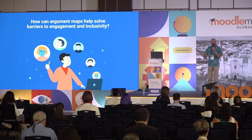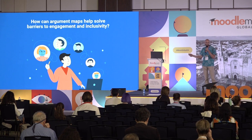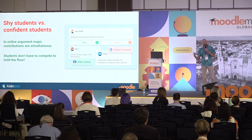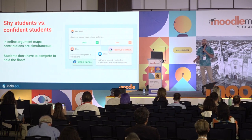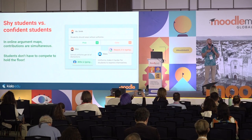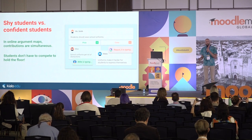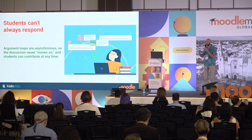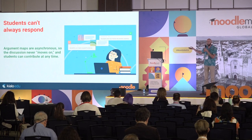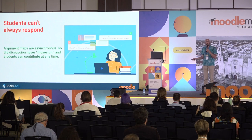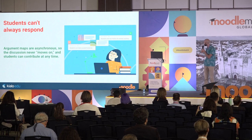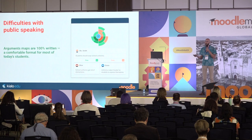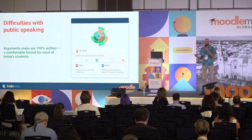How can argument maps actually alleviate some of these barriers to engagement and inclusivity? When it comes to that mix of shy versus more confident students, a really key benefit of argument mapping is that contributions are simultaneous — everybody can participate at the same time, and shyer students do not have to compete with more confident students to hold the floor. Students also don't have to get frustrated with not being able to respond to everything they want to, because argument maps are asynchronous. As long as the discussion is open, students can respond to any claim when they like. And for students who have trouble with public speaking, with an argument map there is simply no need to — everything is completely written out, a very comfortable format for many of today's students.